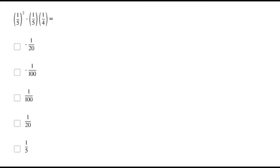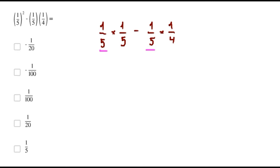Here we are going to do the following. 1 over 5 squared is the same as 1 over 5 times 1 over 5. Now, I will factor 1 over 5, so we get 1 over 5 times 1 over 5 minus 1 over 4.